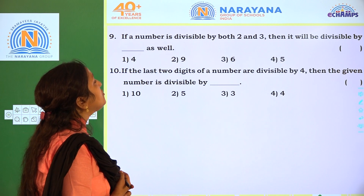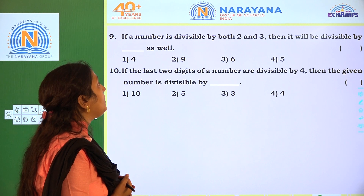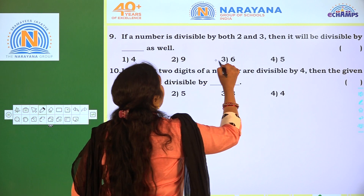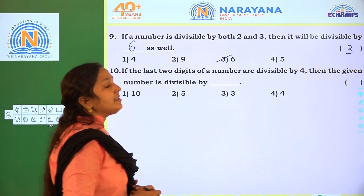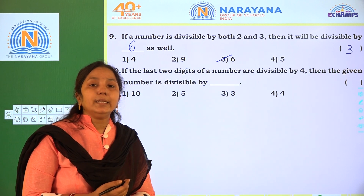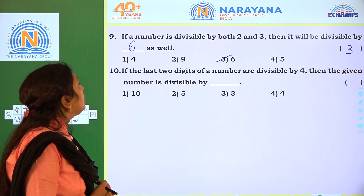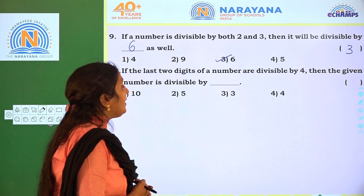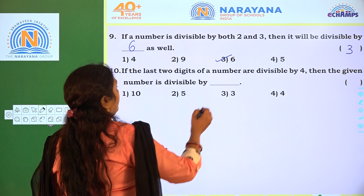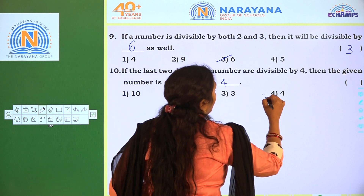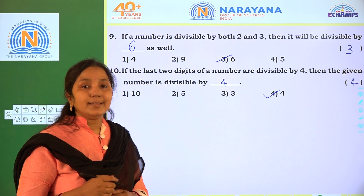Next one: if a number is divisible by both 2 and 3, it must be divisible by 6. Next one: if the last 2 digits of a number are divisible by 4, then the given number is divisible by 4. Our required option is 4, children. Got it, children? Practice once again. Thank you.